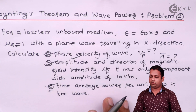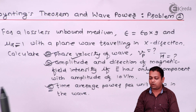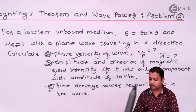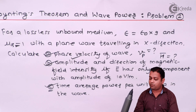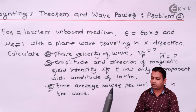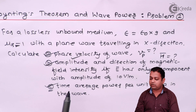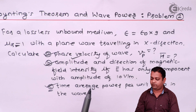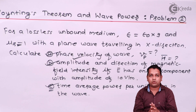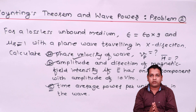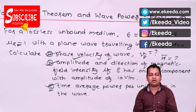Given the medium parameters — permittivity and permeability — along with the direction of propagation, we can calculate the phase velocity. Given E bar, we can determine H bar by finding the intrinsic impedance of the medium. Intrinsic impedance is significant for relating electric and magnetic components and for calculating the time average power per unit area. In the next video, we will take the last problem based on the Poynting theorem and wave power. For more information and problems on Electromagnetic Field Theory, subscribe to the Ikeda channel. Thank you.